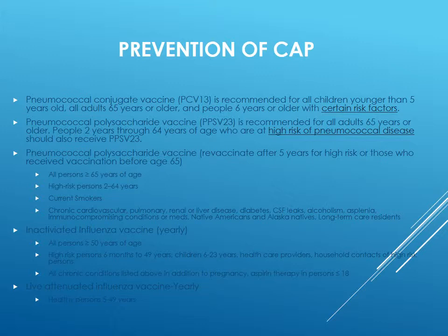The only thing that's changed is this new addition — the PCV13 vaccination — and you have to be very careful how you give it. It has to be at least eight weeks apart, and they recommend six to twelve months later. You could give one vaccine and then wait a year and give the other. Don't forget about your influenza vaccine: all people over 50 get it, high-risk persons aged 6 months to 49 years, children 6 to 23 months, and healthcare providers. All chronic conditions listed above, plus pregnancy. The live virus nasal spray can be given to all healthy persons age 5 to 49 years.